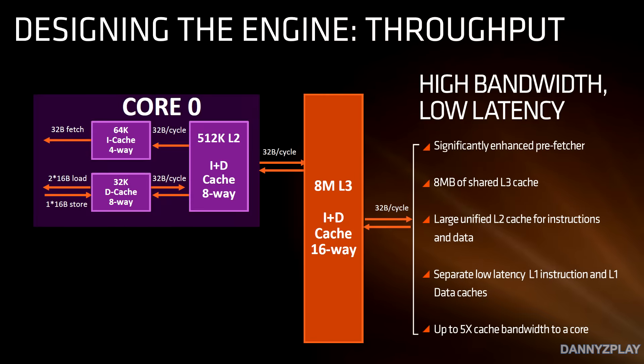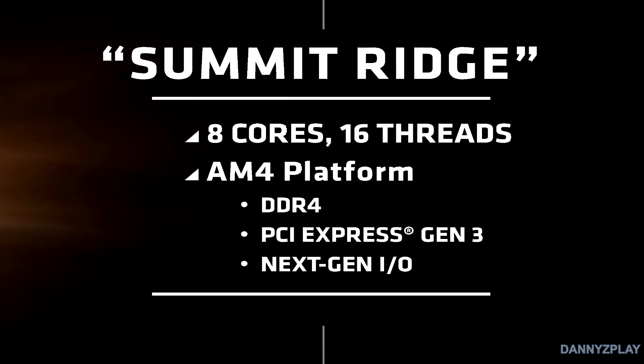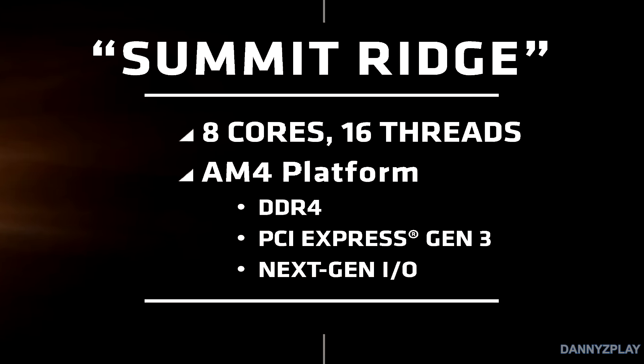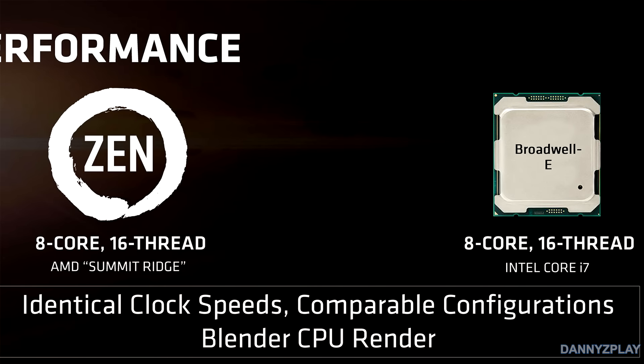Summit Ridge will have 8 megabytes of shared L3 cache and will allow up to five times the cache bandwidth to a core. Summit Ridge will be the first product available with Zen, based on the AM4 platform, with processors going up to 8 cores and 16 threads across multiple SKUs. With Zen, AMD is looking to compete head-to-head against Intel's enthusiast-grade processors — basically a direct opposite of what they did with their new GPU lineup Polaris. Unlike the GPU market, AMD was pretty much absent in the CPU market and had a lot of catching up to do.